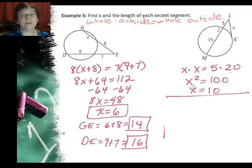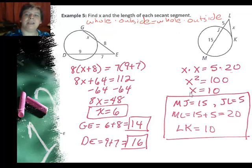And then if I go find every possible segment here, I can say MJ is 15, JL is 5 because it's right there in the picture, ML is 20 by adding those two, and LK is 10.